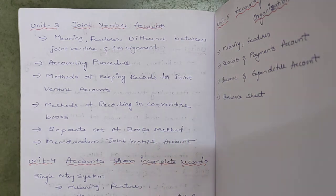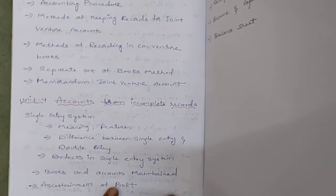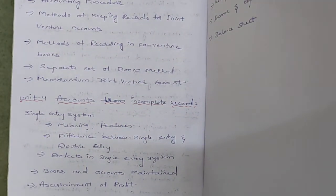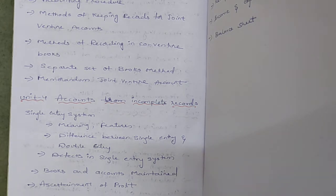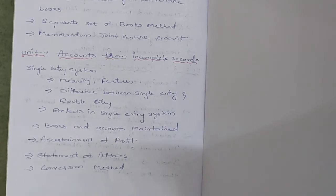Unit 4 is Accounts from Incomplete Records, which means Single Entry System. Topics include: meaning of single entry system, its features, difference between single entry and double entry system, defects in single entry system, books and accounts maintained, ascertainment of profit — how to calculate profit — statement of affairs, and conversion method.